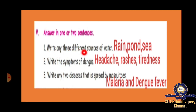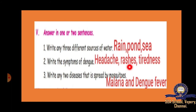Answer in one or two sentences. Write any three different sources of water: rain, pond, and sea. Write the symptoms of dengue: headache, rashes, tiredness, and fever. Write any two diseases spread by mosquitoes: malaria and dengue fever.